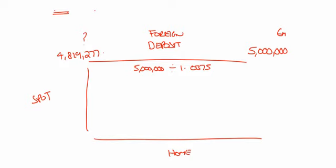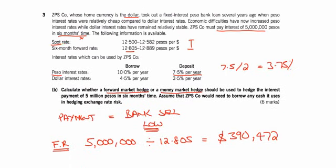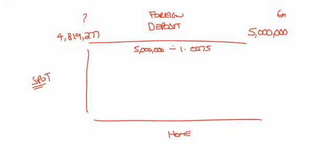But I don't have 4,819,277 pesos now. So I can use the exchange rate today — that's the whole point of doing a hedge. The bank will sell me this money now at the spot rate. I'll sell it at the low again at 12.5, because remember it's a payment and they sell low. So divide 4,819,277 by 12.5, and this gives me $385,542 that the bank wants from me now. I don't have that either, so I need to borrow it. As it's already in dollars, I'm borrowing at the home rate.